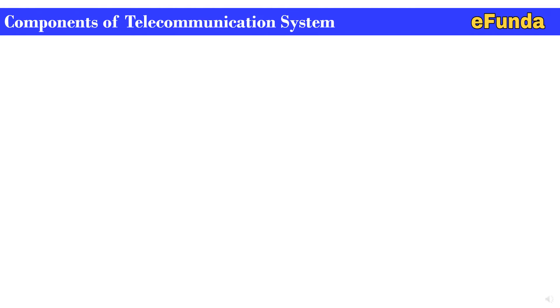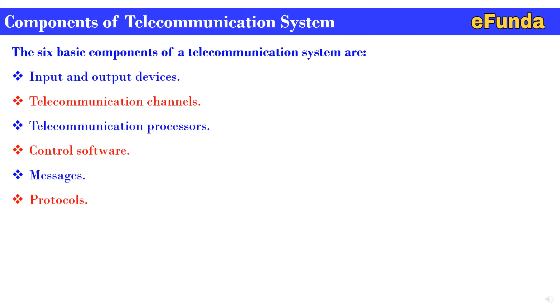In this slide we are going to see the main basic components of a telecommunication system, including the list and a typical system block diagram for better understanding. The six basic components of a telecommunication system are: input and output devices, telecommunication channels, telecommunication processor, control software, messages, and protocol.